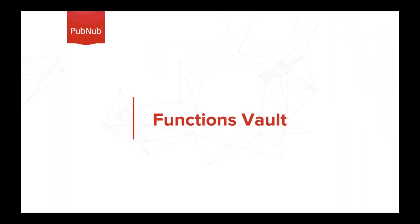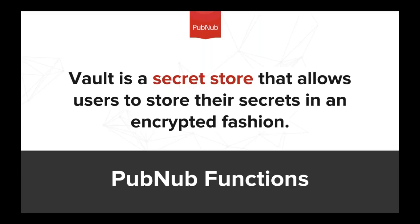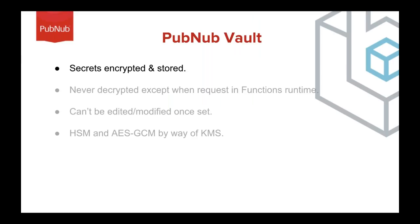Functions Vault is a secret store that allows users to store their secrets in an encrypted fashion. Very commonly, software infrastructures need to talk to each other, and in order to do so, they need to trust each other via a process of authentication. But how do you bring your authentication credentials to your infrastructure confidently? Enter PubNub Vault. We allow you to bring these secrets in and store them in an encrypted fashion, and we only decrypt them when you request them in the Functions Runtime. This allows end-to-end security for your API credentials, and now you can connect PubNub Functions to any other third-party API or infrastructure that you operate.